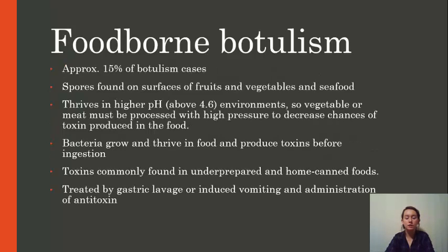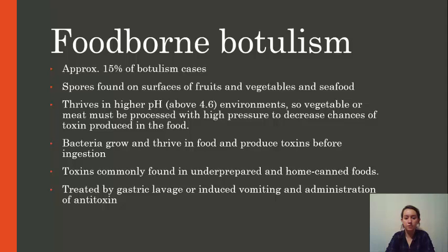Foodborne botulism comprises about 15% of botulism cases seen in the United States. When food is grown in soil that is contaminated by C. botulinum, spores can form on surfaces and also come into contact with fish in marine environments. These bacteria can thrive in higher pH environments, so when vegetables and meat are processed, they have to be cooked at higher pressure and higher temperature — usually about 121 degrees Celsius for about 20 to 100 minutes — to decrease the chances of contamination.